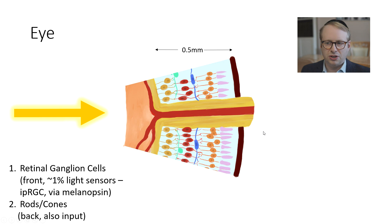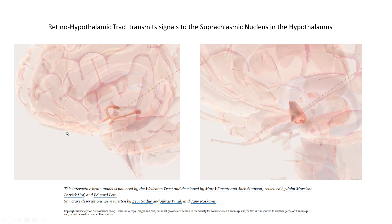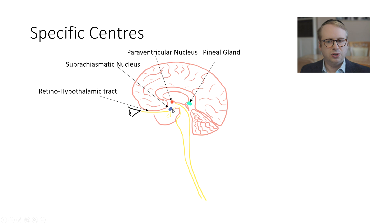This signaling pathway is called the retinohypothalamic tract, which makes its way to the suprachiasmatic nucleus, which sits above the optic chiasm. That signal then moves from the suprachiasmatic nucleus to the paraventricular nucleus, which then signals the pineal gland. The pineal gland then releases melatonin, which makes its way through the CSF to various centers within the brain and also to the rest of the body.